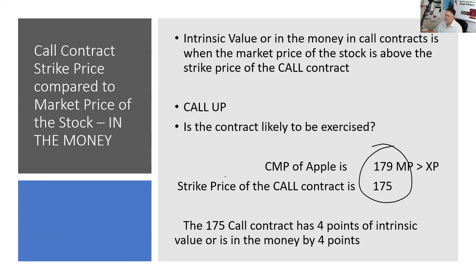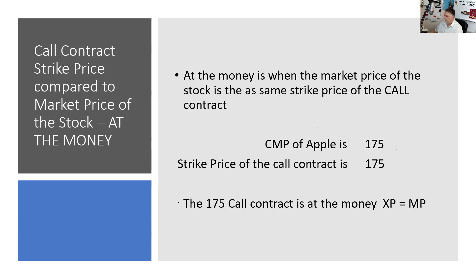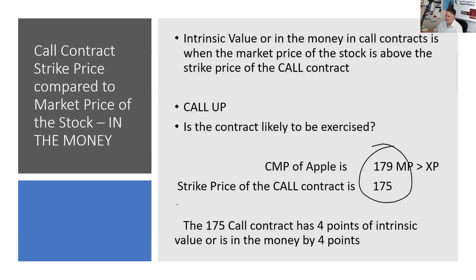Now if you're going to trade options, I'd like to make you write a thousand times: options are a wasting asset—time value erodes. We haven't talked about time value yet, but it's going to go away. At expiration, the contract is only going to be worth its intrinsic value. So we have three relationships: in the money. To say this contract has four points of intrinsic value and to say it's in the money four points is the same discussion.